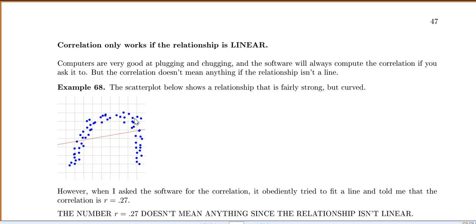So this is example 68. The scatter plot shows an example that's fairly strong. Notice my points are pretty close to each other, but it follows a curved relationship so a line is not going to be a good fit. However when I asked the software for the correlation it obediently tried to fit a line.